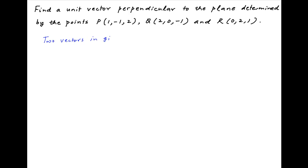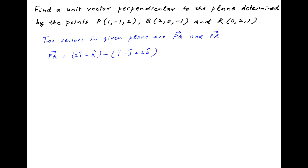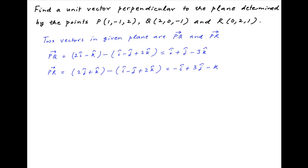Two vectors in the plane containing the points P, Q and R are PQ and PR. Vector PQ is equal to the position vector of point Q minus the position vector of point P, which is equal to 2i minus k minus (i minus j plus 2k), giving i plus j minus 3k. Vector PR equals the position vector of R minus the position vector of P, which is 2j plus k minus (i minus j plus 2k), giving minus i plus 3j minus k.